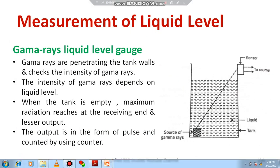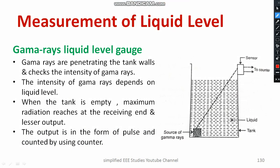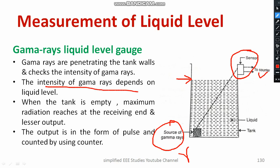Now I am going to discuss the gamma ray liquid level gauge. The ultimate goal is to measure the liquid level relative to a datum. We have a source of gamma rays, and the gamma rays are sent through the particular liquid where we need to measure the height. On the opposite side, there is a sensor connected to digital electronic circuits. The intensity of gamma rays depends on liquid level. When the tank is empty, maximum radiation reaches the sensor. When the liquid level is high, very little gamma radiation reaches the sensor.